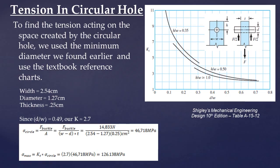Next, we find the tension in the circular hole. To find the tension here, as I mentioned before, we used the charts provided in the textbook. This particular one that we used for the circular hole is from Shigley's Mechanical Engineering, 10th edition, table A15-12.